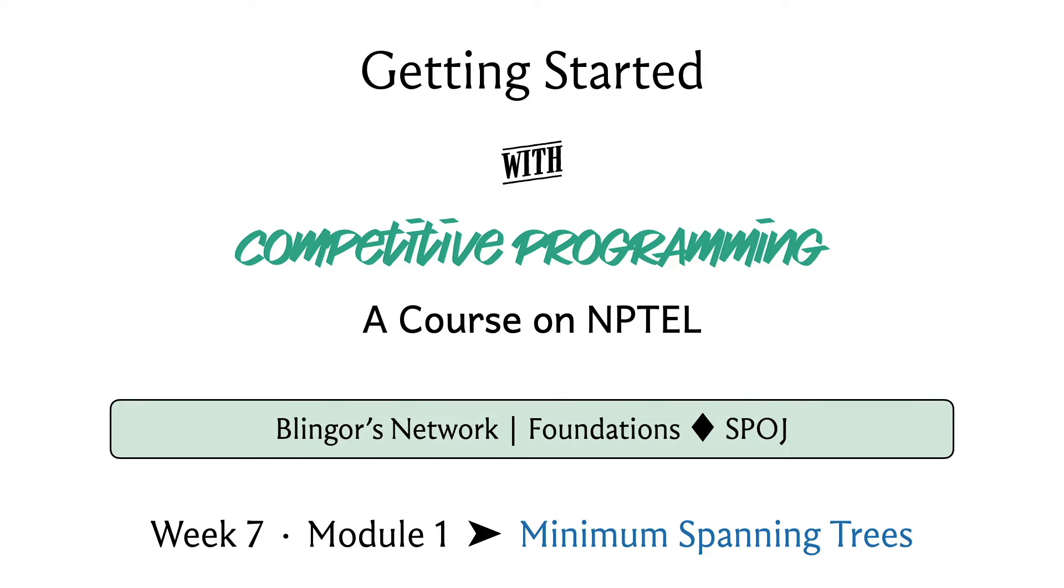We will be testing both of these implementations using a problem on the Sphere Online Judge called Blingor's Network. It's a very direct ask for a spanning tree, so all we have to do is make sure that we read the input carefully and then pass it on to the implementations of our algorithms. The problem statement promises large inputs, so this should be a good way to stress test the efficiency of our implementations.